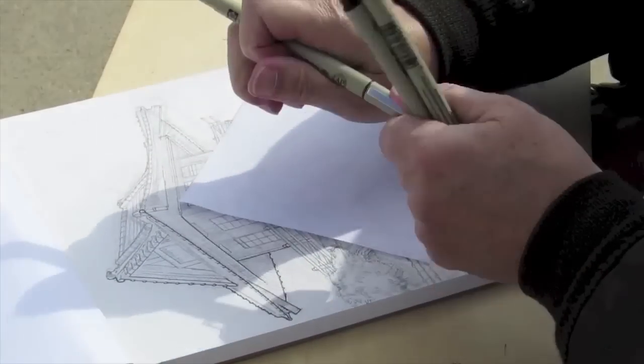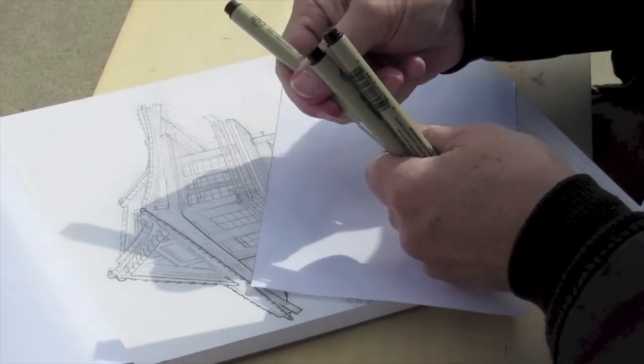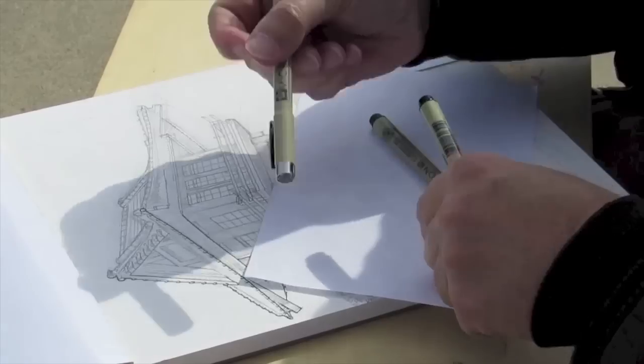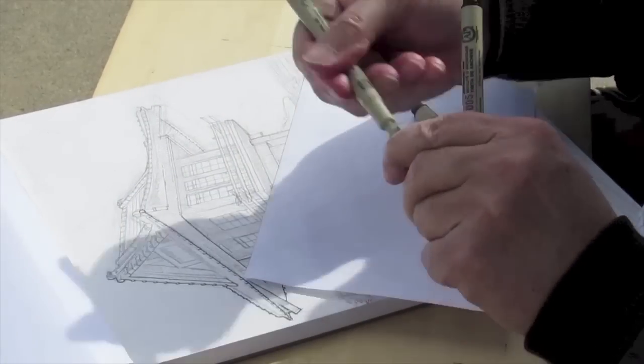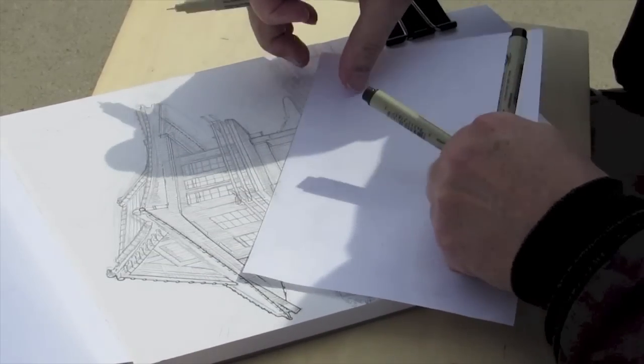Now for the detail on the underside of that roof, I'm actually going to switch now to my O1, which is one step down in fineness.